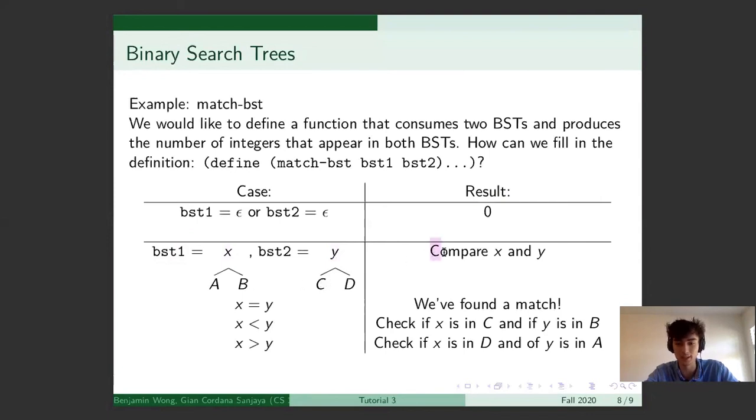In this case, you want to compare X and Y and you're going to decide what to do next based on that comparison. So if X and Y are the same thing, we found a match and you need to keep going. You need to add that to some kind of tally, most likely an accumulator, and then you need to keep looking for more matches.